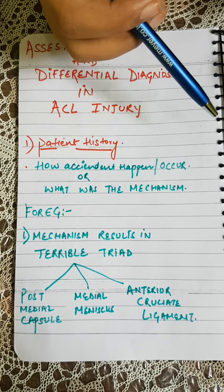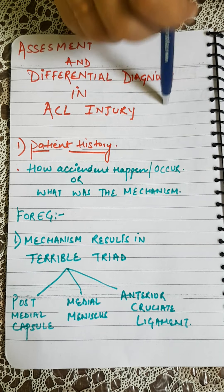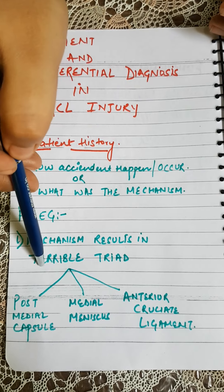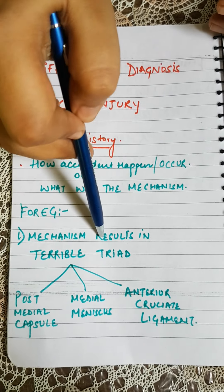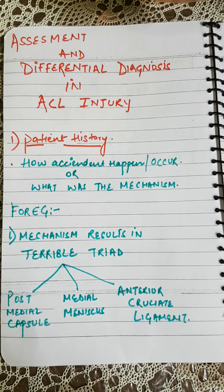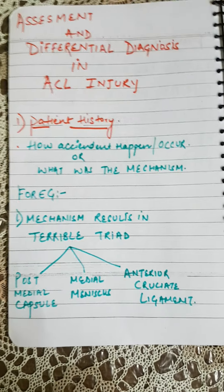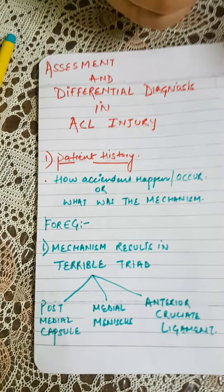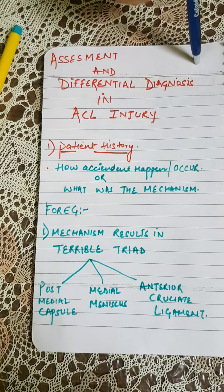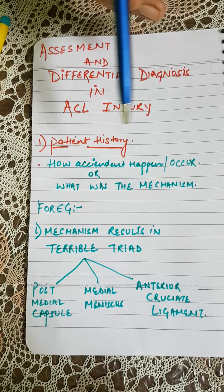The first mechanism often results in injury to the medial collateral ligament, frequently accompanied by injury to the posterior medial capsule, medial meniscus, and anterior cruciate ligament — called the terrible triad because three elements are injured. The second mechanism leads to anterior cruciate injuries often associated with meniscus tear. The third involves the posterior cruciate ligament; the fourth involves the lateral collateral ligament, posterior collateral capsule, and posterior cruciate ligament.